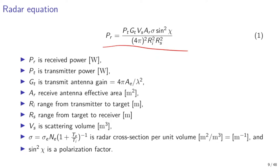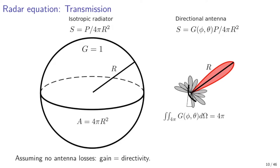We'll start by determining the amount of power per unit area delivered by the radar transmitter to the volume of plasma at range R. For an isotropic radiator, the power is evenly distributed over the surface of a sphere. At a distance R, the power per unit area is transmitted power P divided by 4πR², the area of a sphere at distance R, in units of watts per square meter.